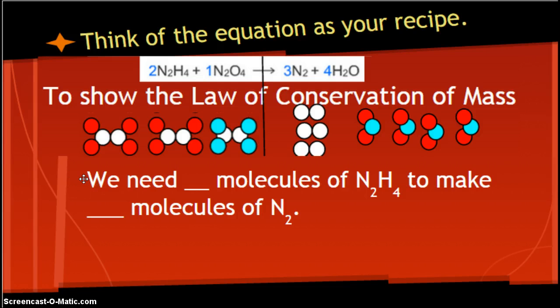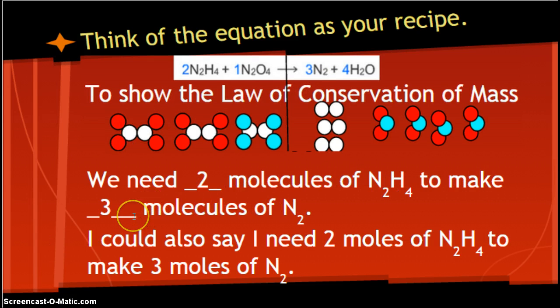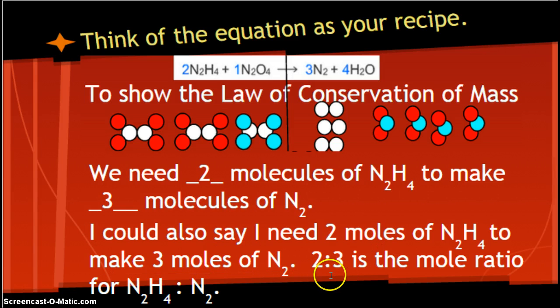By the way, my littlest one is going through potty training and she gets M&Ms as her reward. So that's why M&Ms are in every example I think of. You can even picture these as little M&Ms, so much prettier. We need how many molecules of N2H4 to make how many molecules of N2? We need two. And when we have two of them, assuming we have enough of the rest of the chemicals, we make three molecules of N2.